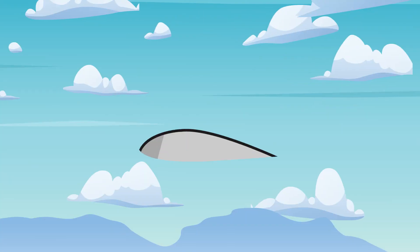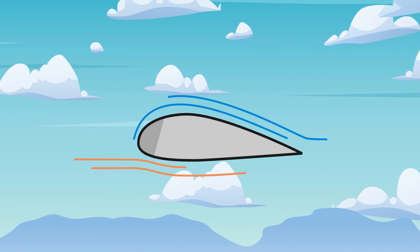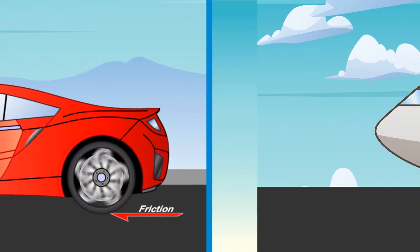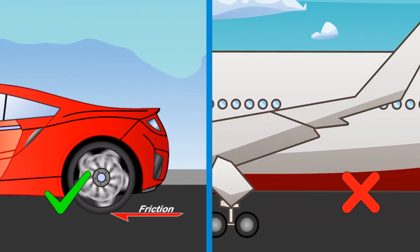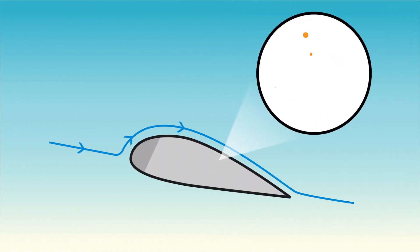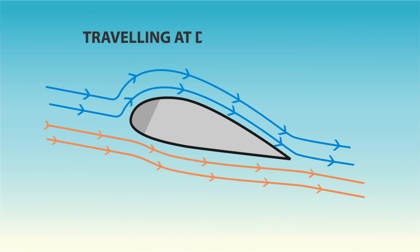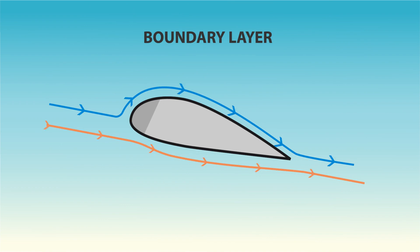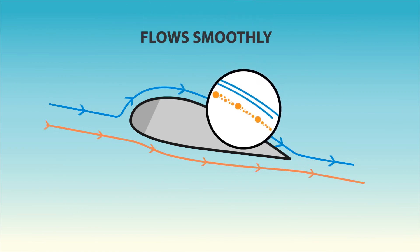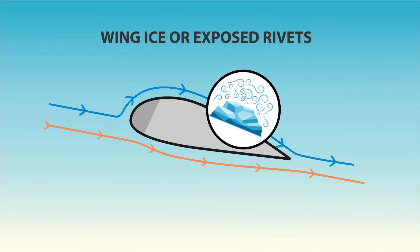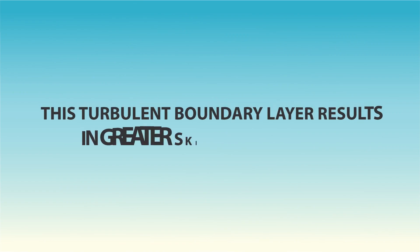Skin friction drag is the aerodynamic resistance due to the contact of moving air with the surface of an aircraft. Any surface moving along another surface creates friction, just like tires against pavement. While friction of rubber on asphalt is generally a good thing for autos, it's very poor for aircraft performance. As air passes over a surface, air molecules closer to the surface slow down more than those further away, creating individual layers traveling at different speeds. The layer of air closest to the surface, which travels more slowly than the air mass passing the aircraft, is called the boundary layer. When the boundary layer flows more smoothly, skin friction drag is reduced. When imperfections exist on the skin surface — like wing ice or exposed rivets — a more turbulent boundary layer forms, resulting in greater skin friction drag.